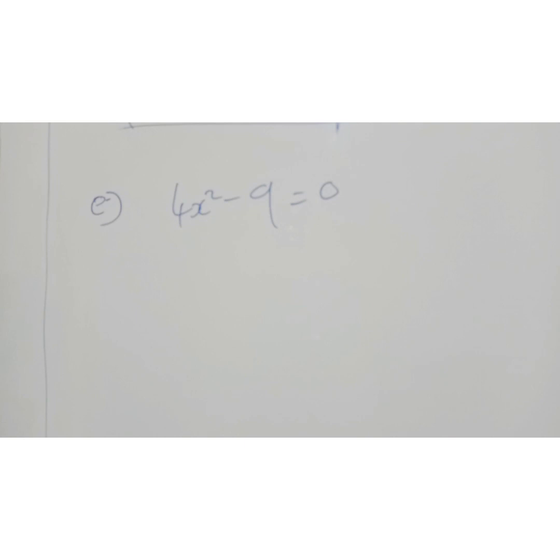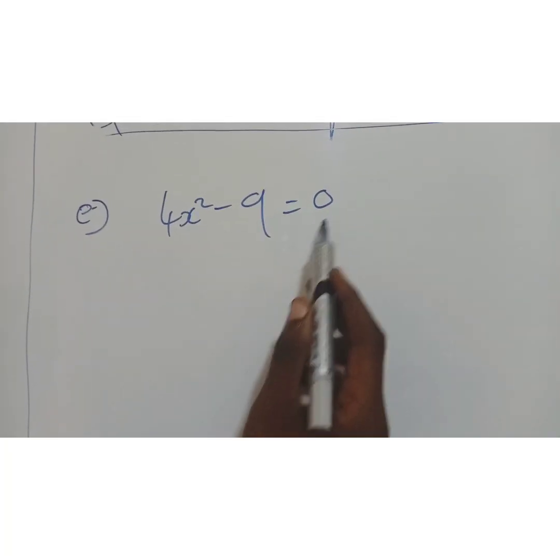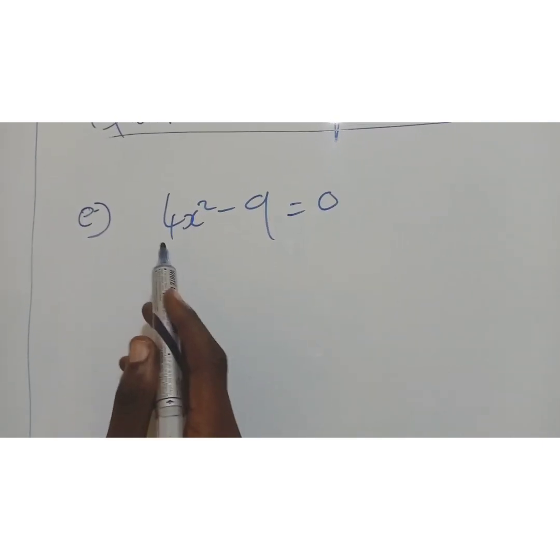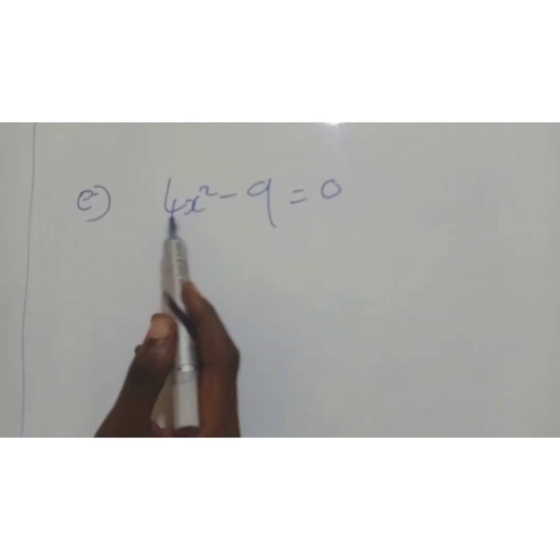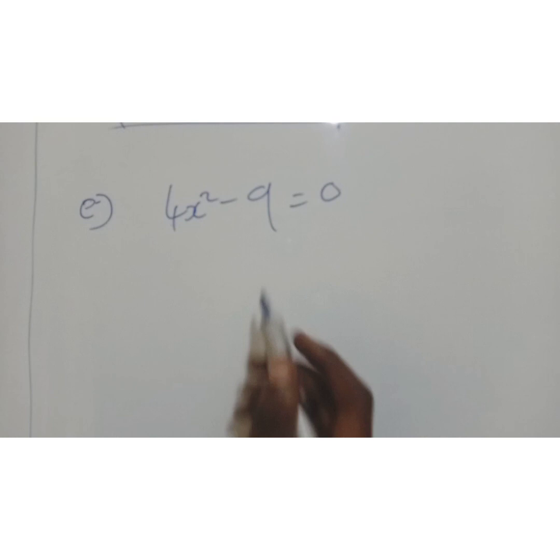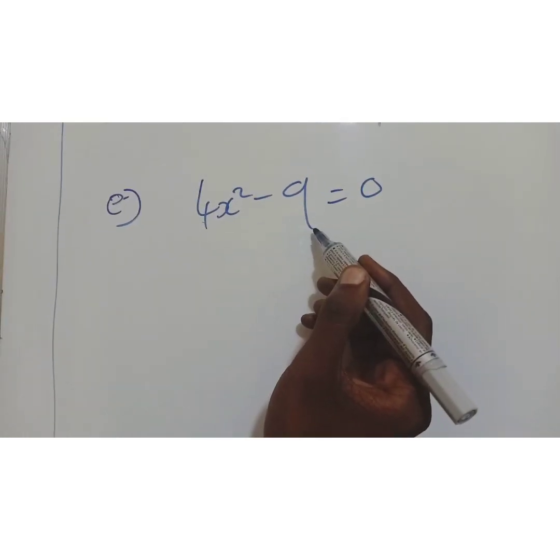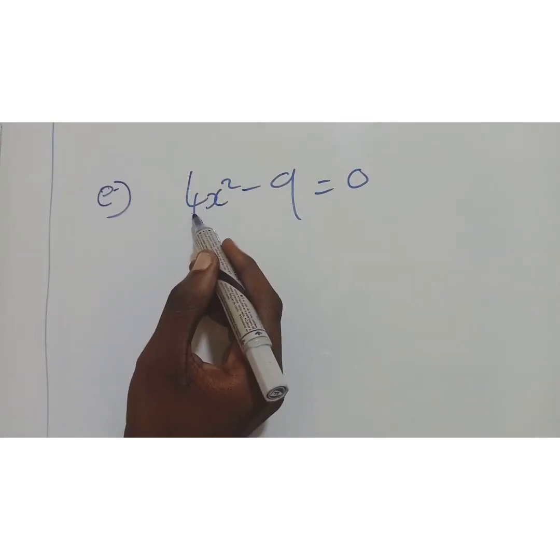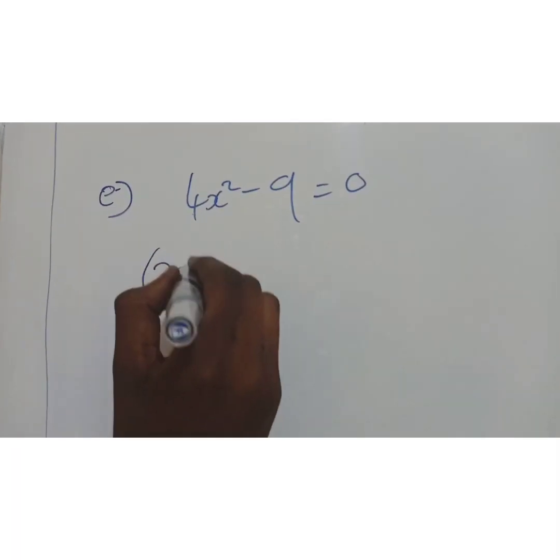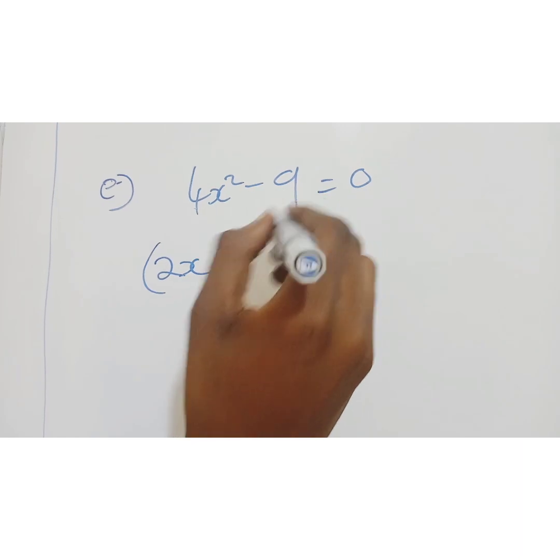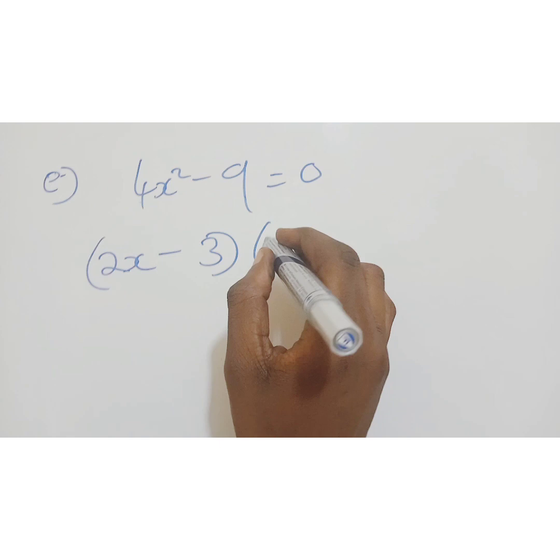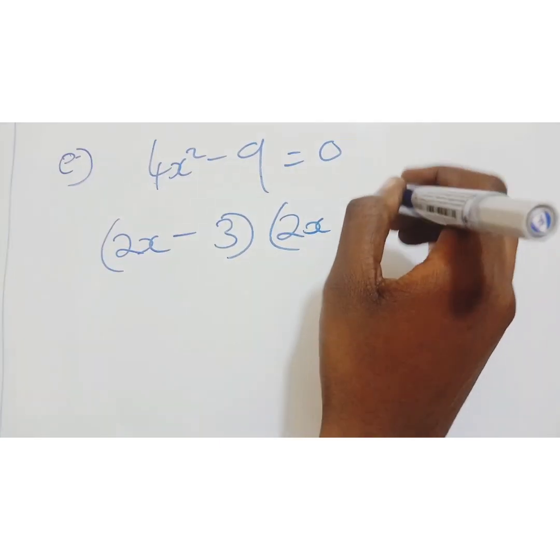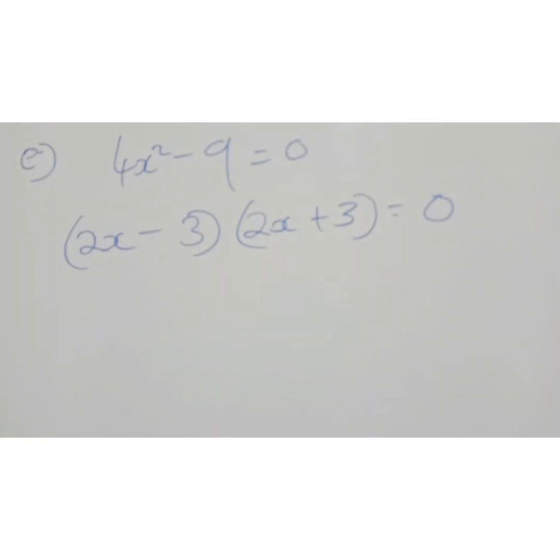So now we are looking at our example e. We have 4x squared minus 9 equals 0. Now, this example has no common factor. The only thing that is common is that both numbers have roots. The root of 9 is 3. The root of 4 is 2. So we set 2x, the root of x squared is x minus root of 9 is 3.